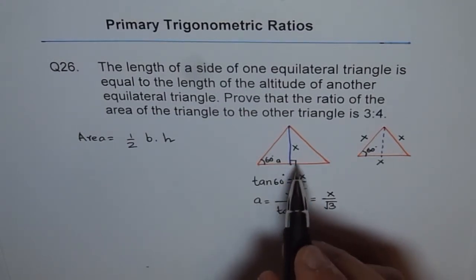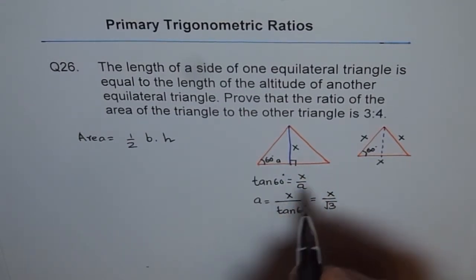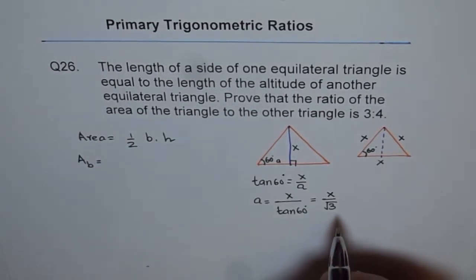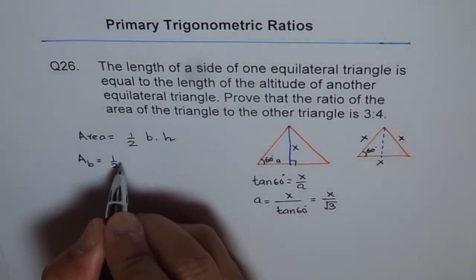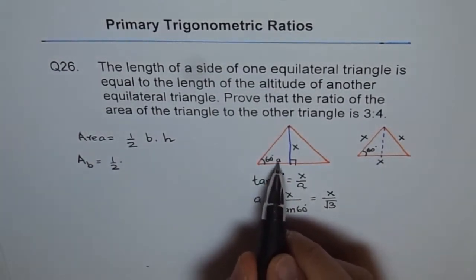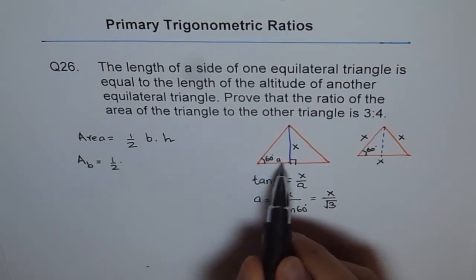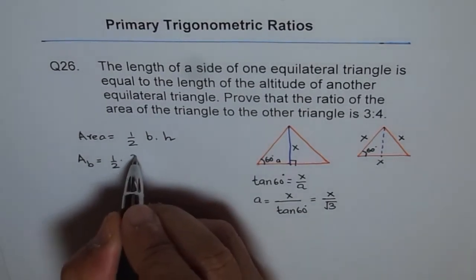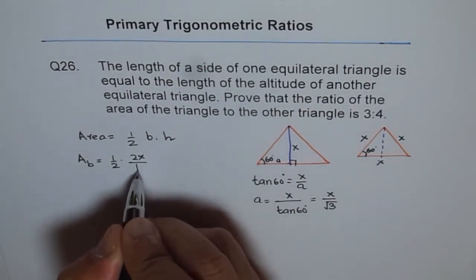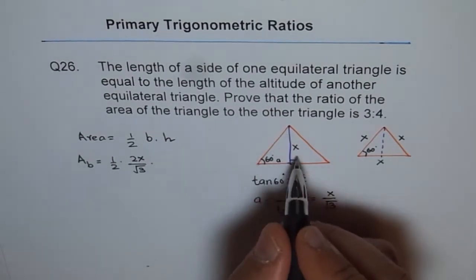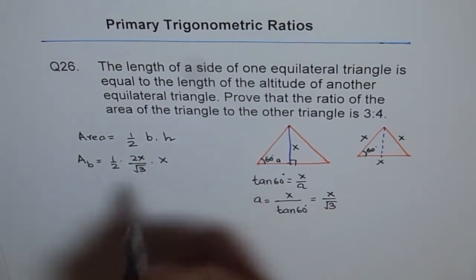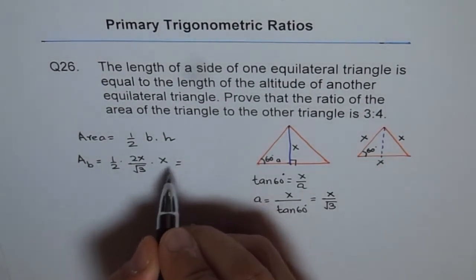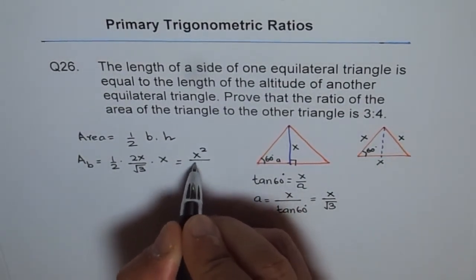We know a, and therefore the area of the big triangle equals half. The base is 2 times a, which is 2x over square root of 3, and the height is x. So we can simplify this and write the area as x squared over square root of 3.